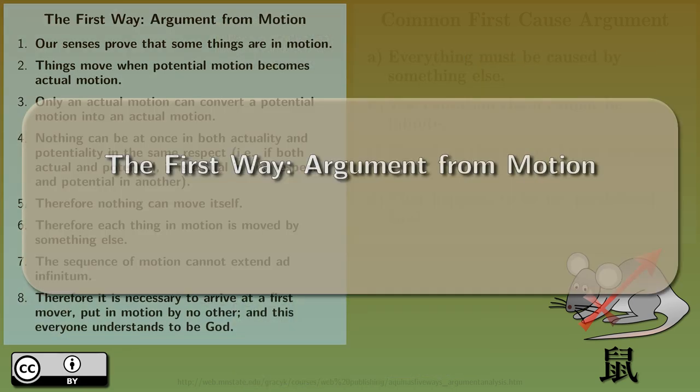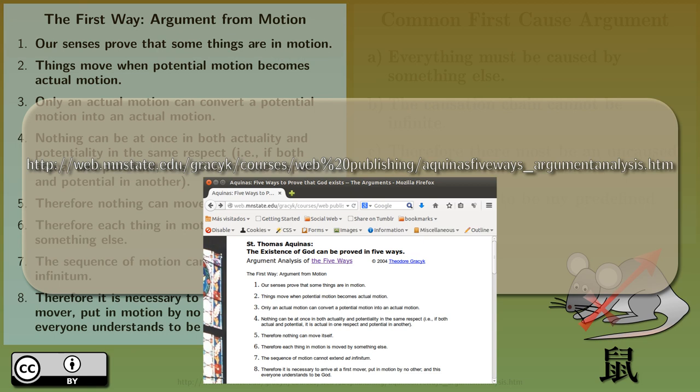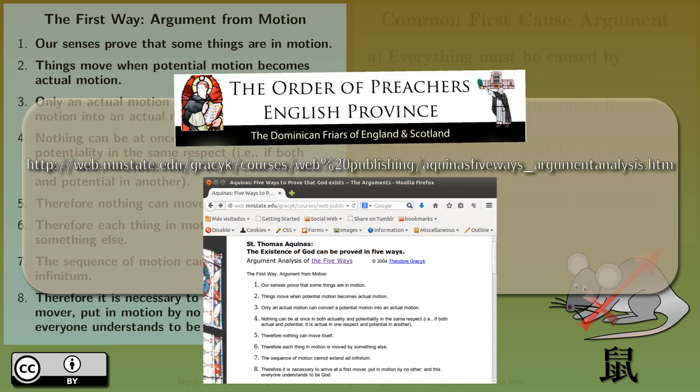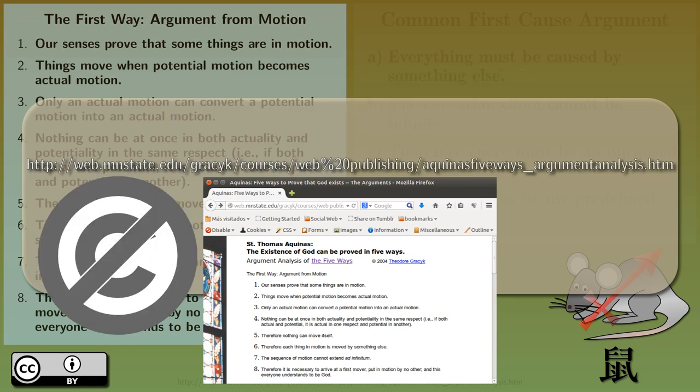The first way, argument from motion. Let's see this argument. The wording is taken from this page, which I understand is a translation from Latin by the Fathers of the English Dominican province in 1920. This translation is not in public domain, although I have not searched it, so I take the word from the webpage.